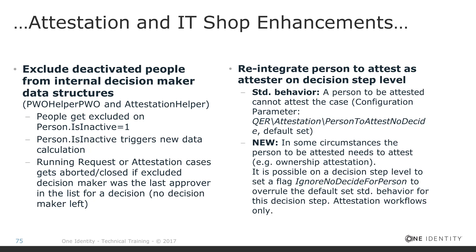This was not possible in the past. So we reintegrated into the product a way that on the decision step level, there is a new flag — 'decide for person.' And if I set that flag, then I am able in this step, as a person who is responsible to attest something where I am the owner or where I am affected, to do so.